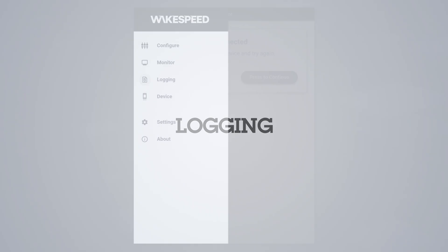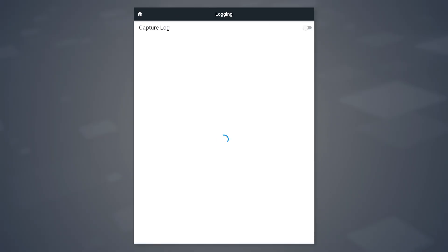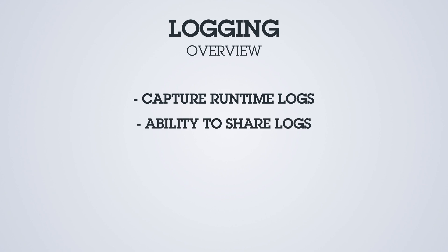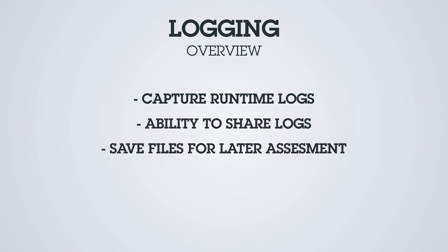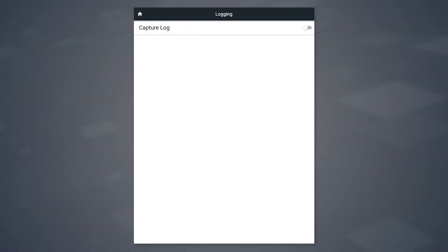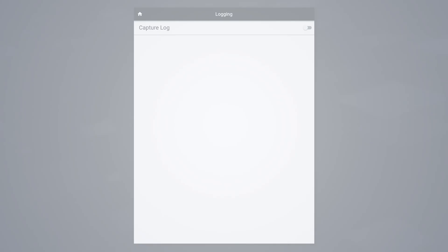The logging screen is a very powerful tool. It lets you capture runtime logs and then share them with others, such as support, or transfer to a computer for later assessment. By logging the information in real-time, you're able to capture a lot of information and insights about what's happening with the battery, the alternator, as well as the regulator itself.